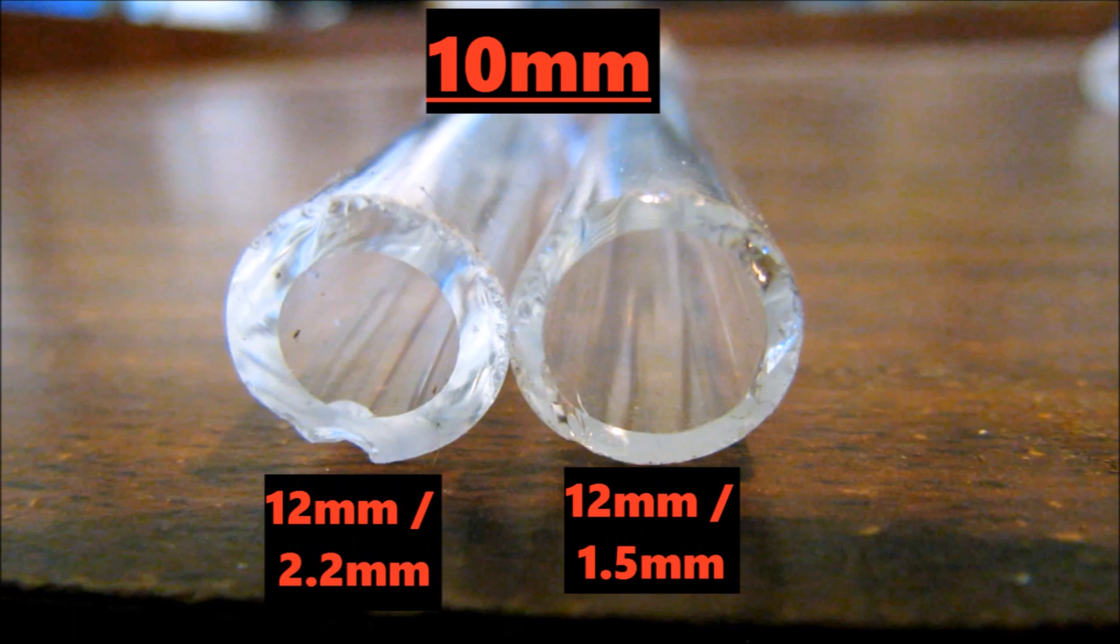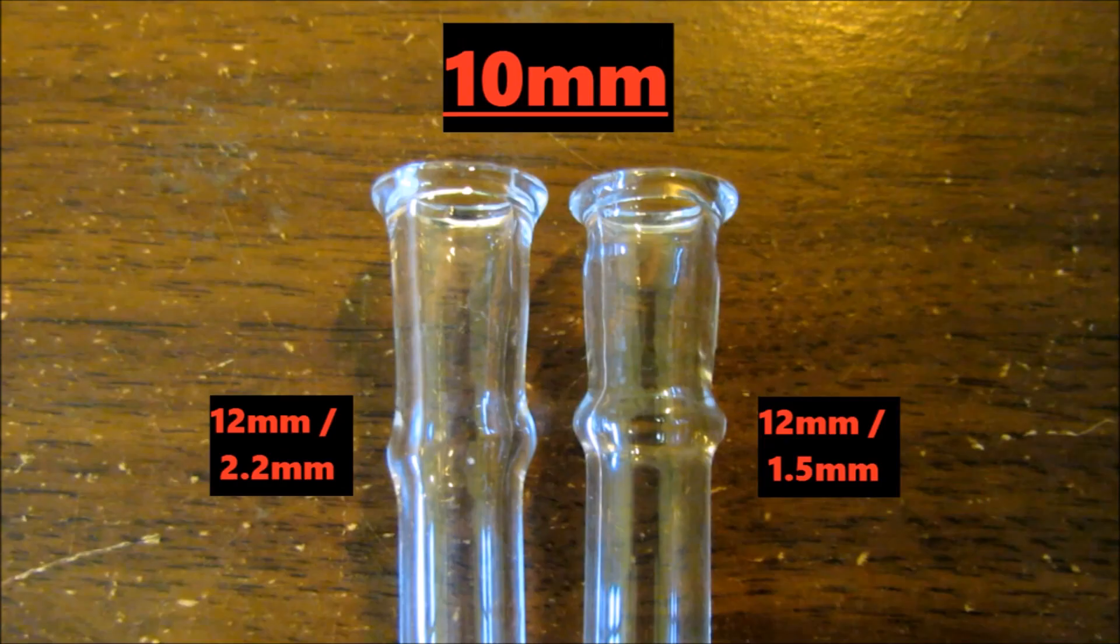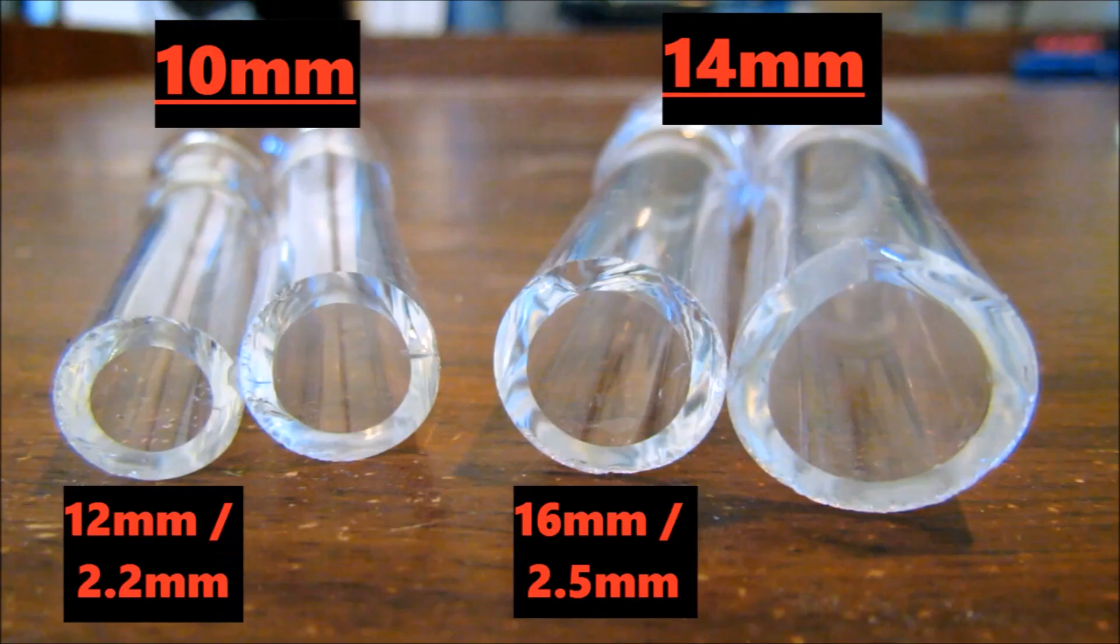If you use a tube with thick wall thickness you will get a thick joint and it will be a strong connection. After a bit of trial and error, for a 10 millimeter joint I like to use a 12 millimeter tube with a 2.2 wall thickness. And for a 14 millimeter joint I like to use a 16 millimeter tube with a 2.5 wall thickness.